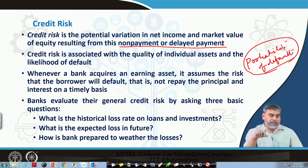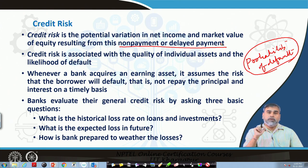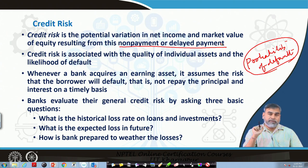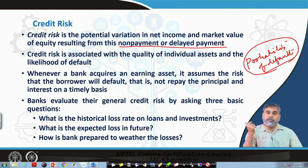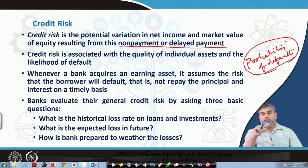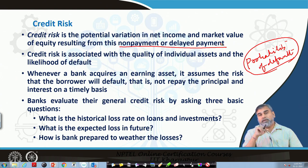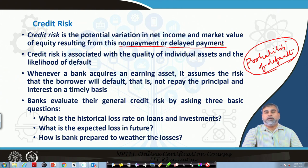Whenever banks evaluate credit risk, they ask three basic questions: one, what is the historical loss rate on loans and investments; two, what is the expected loss in the future — by looking at the past they can predict future expected losses; and three, how is the bank prepared to overcome those losses. These three things are considered whenever a bank evaluates credit risk — historical loss, expected loss, and whether the bank is prepared for those losses.